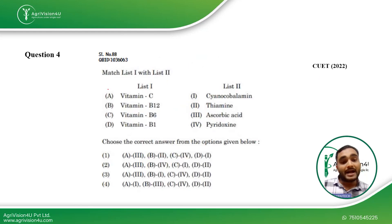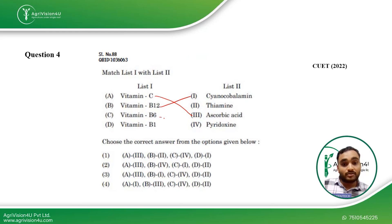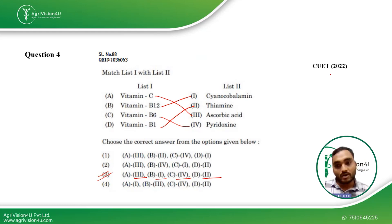Coming to the next question, we have to match the scientific names of vitamins — a topic we discussed in class in November. Vitamin C has the scientific name ascorbic acid. Vitamin B12 is known as cyanocobalamin. Vitamin B6 is known as pyridoxine, and Vitamin B1 is thiamine. The correct answer is option three: A3, 1, 4, 2. This question was also asked in CUET 2022.